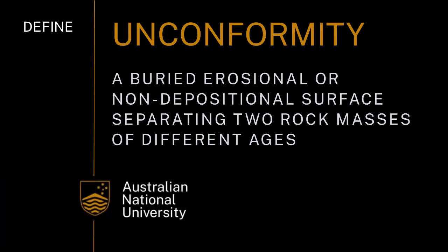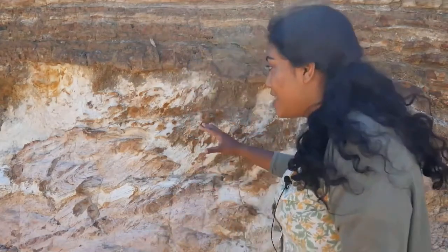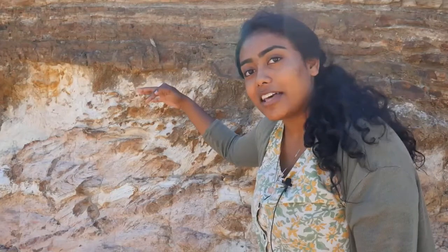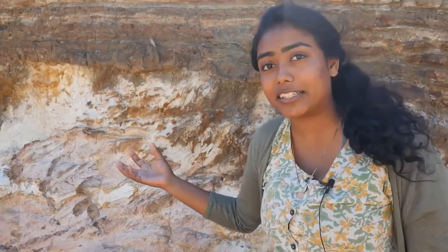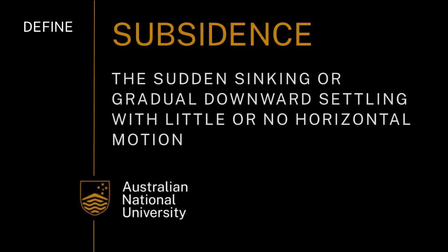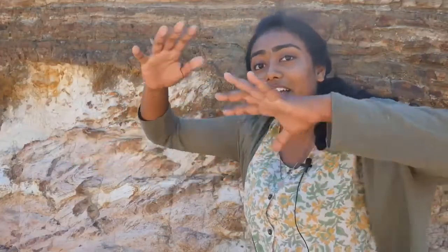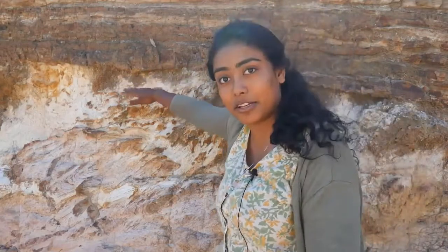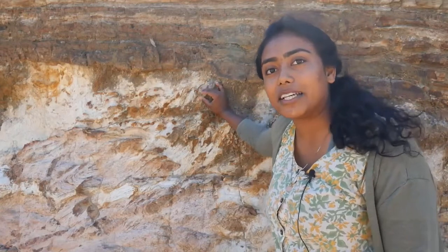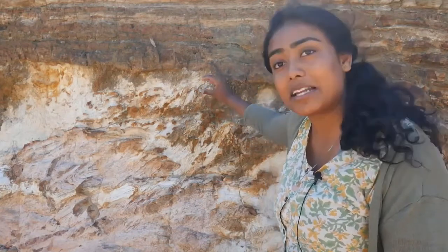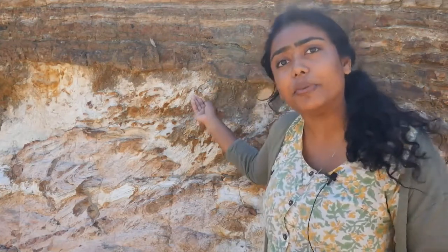What happened here was that this material was deposited first, then buried by more sediments that came on top of it. Potentially some subsidence was going on as well. This would have been lithified, lifted above sea level, and then eroded to create this wavy surface here — the unconformity. This unconformity represents a gap in time, because we have sediments that have been lost from the geological record. Here, this gap in time is on the order of a few million years.